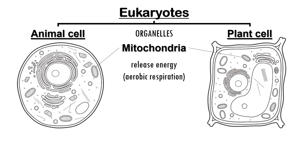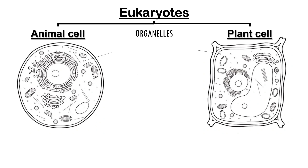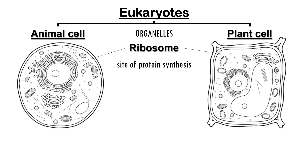Finally, both types of cells contain many ribosomes. Ribosomes are the site of protein synthesis, which means they are responsible for making proteins. Proteins are essential molecules that the cell uses for structure, repair, and function.